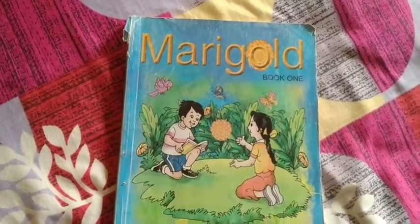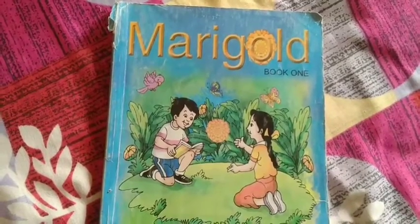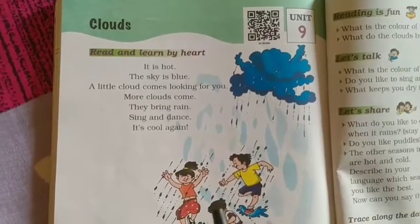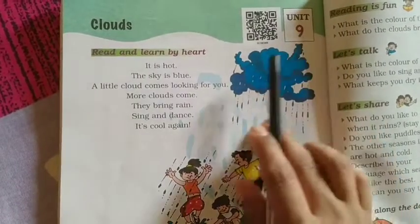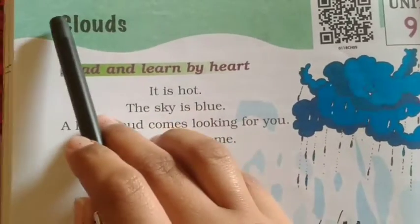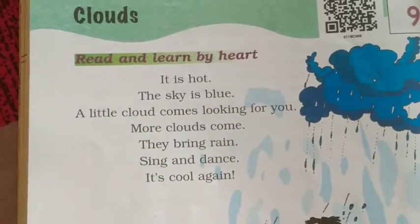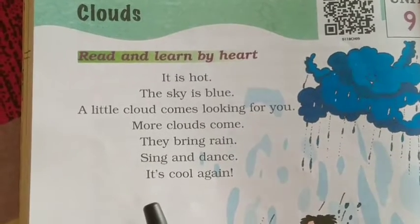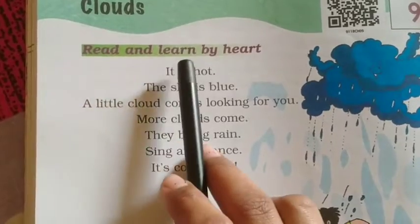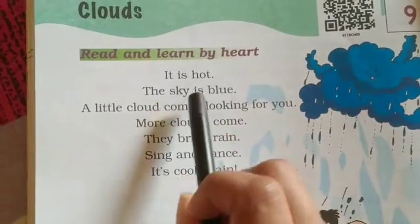Good morning students, how are you all? In this video, we are going to learn our Marigold, a textbook in English for class 1. Today, we are going to learn our new unit, unit number 9. And the first part of the unit is a poem. And the name of the poem is Clouds — C-L-O-U-D-S. Clouds क्या होते हैं — बादल. This is the poem of clouds. Read and learn by heart. आप पढ़िये और समझे दिखिये. Let's start.